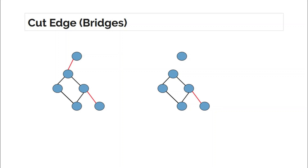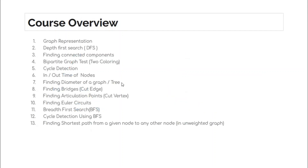After studying cut vertices and bridges, we'll move on to finding Euler circuits. An Euler circuit is a special kind of loop or cycle in which you start and end at the same point and traverse each edge exactly one time in a given graph. We would see how to check whether the graph contains an Euler circuit or not, and how to find it.